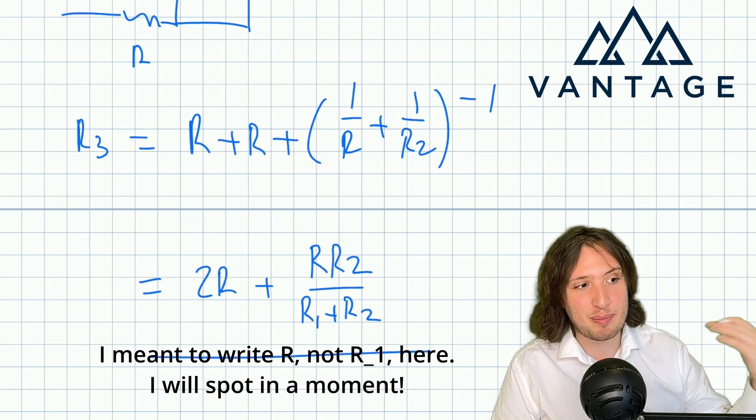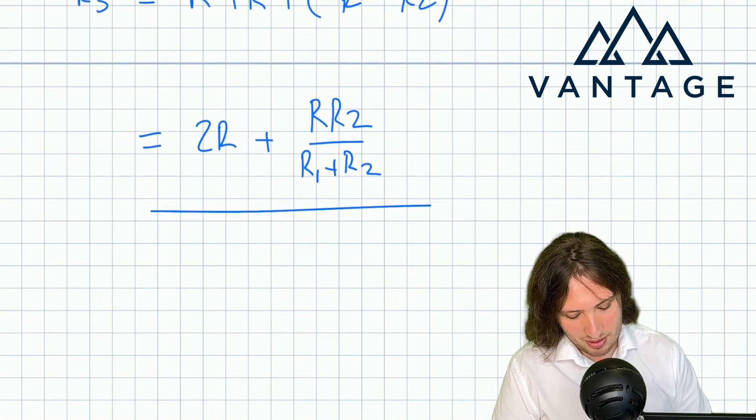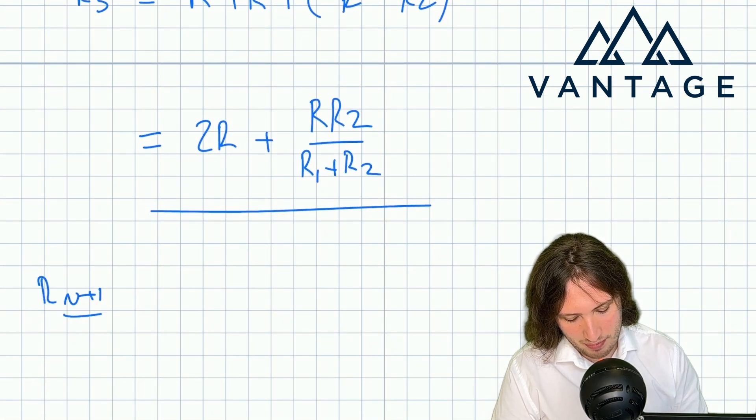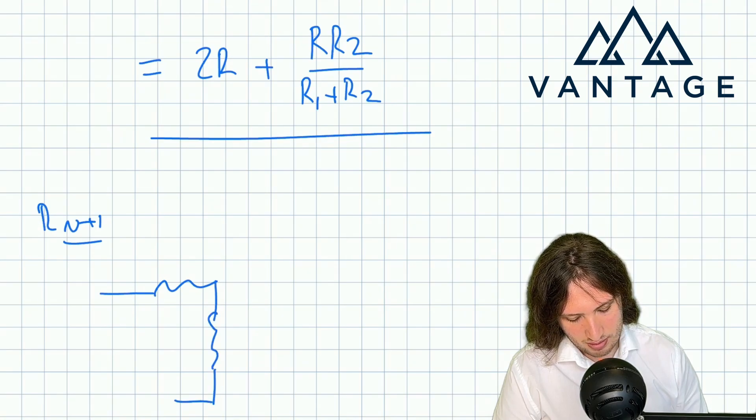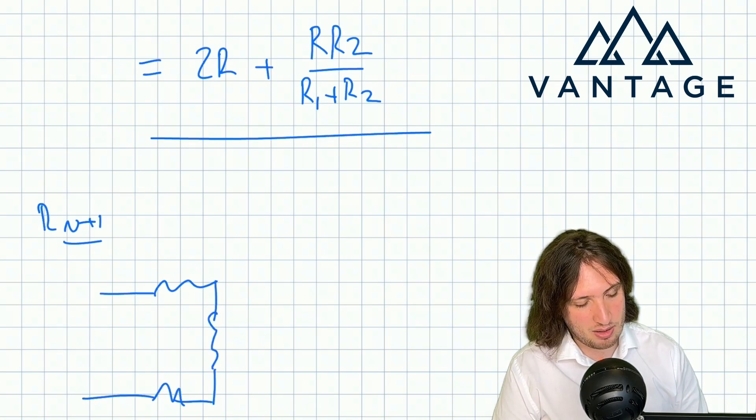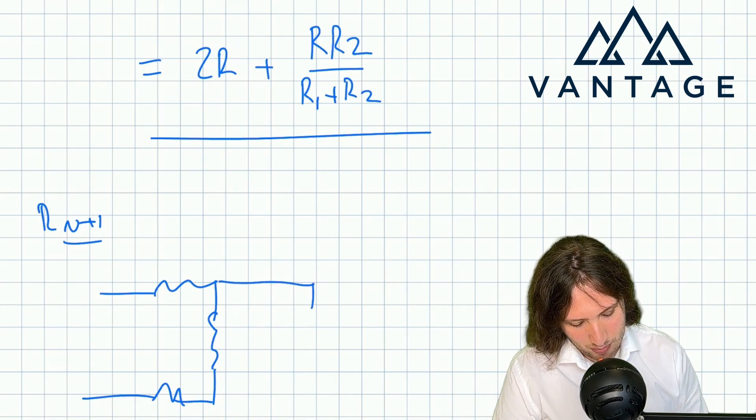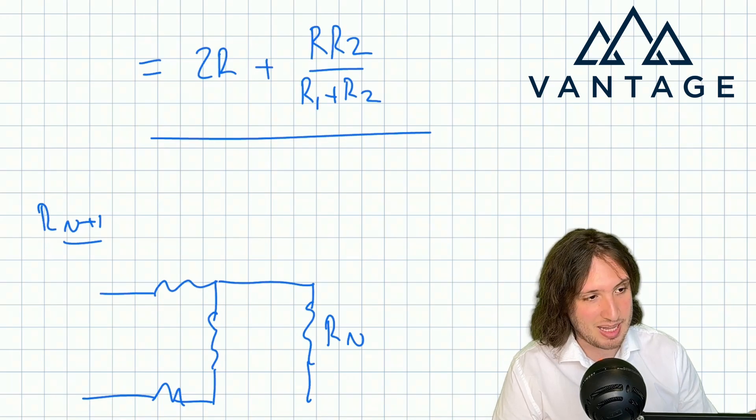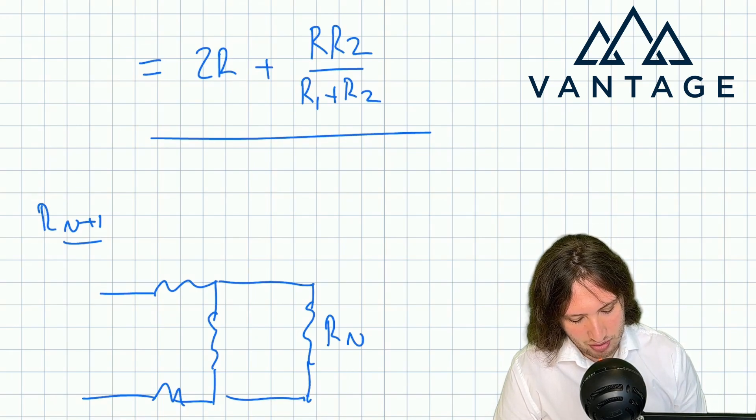But there's nothing special about going from R3 to R2, right? Because what I could now say is that if I want to do Rn+1, it's like I've got my rung and then all the other stuff is like an n rung resistor. So I can imagine replacing it with Rn. So we've seen the nice thing that happened for R3 to R2 and we've generalized it.